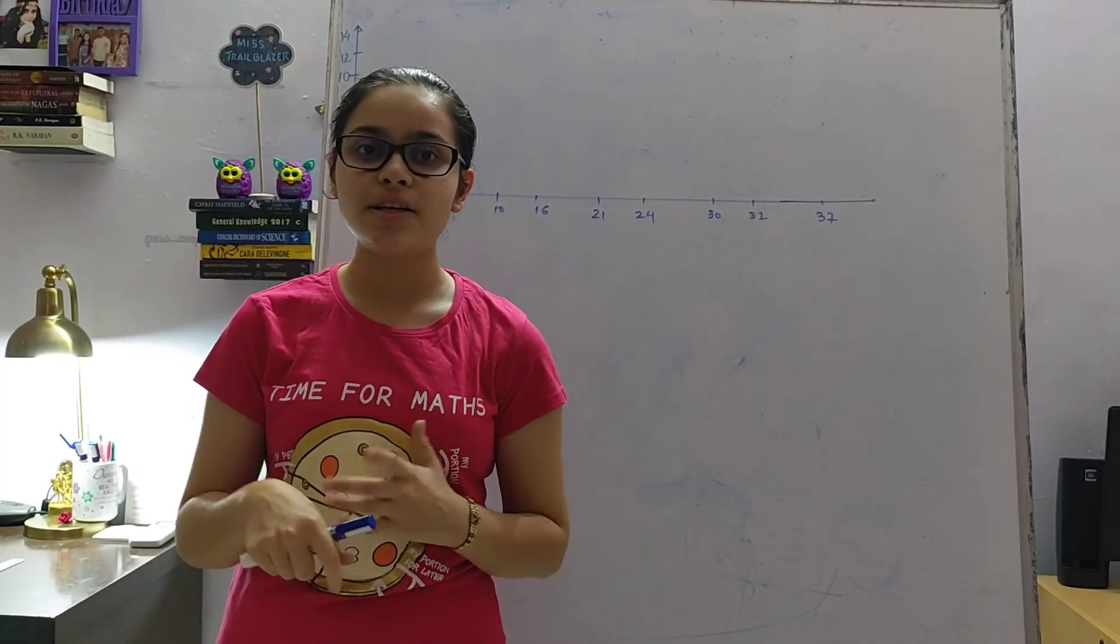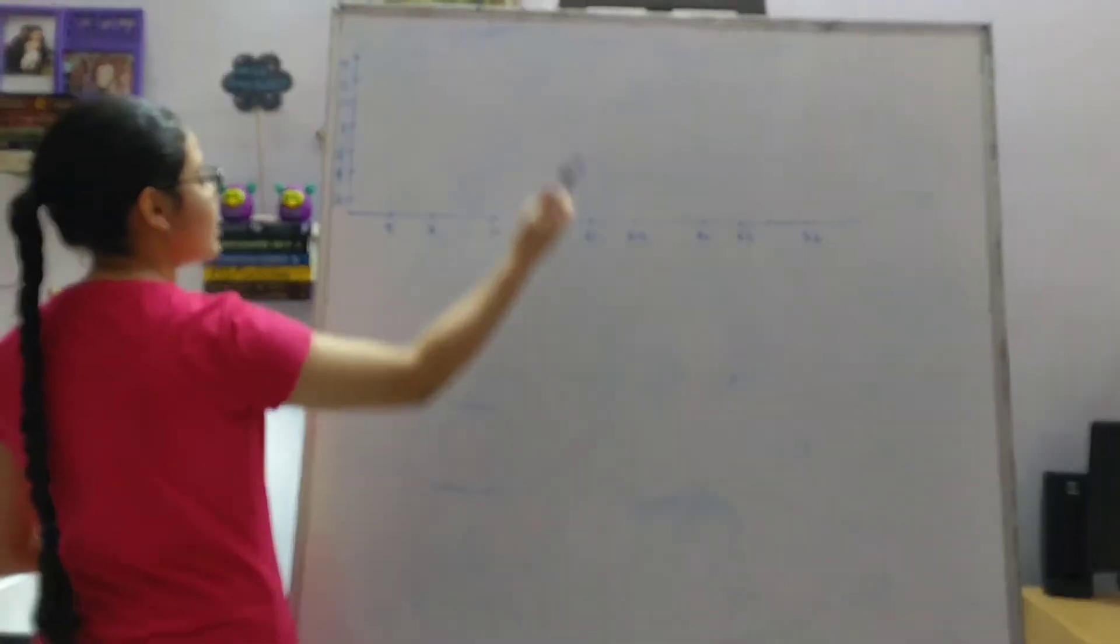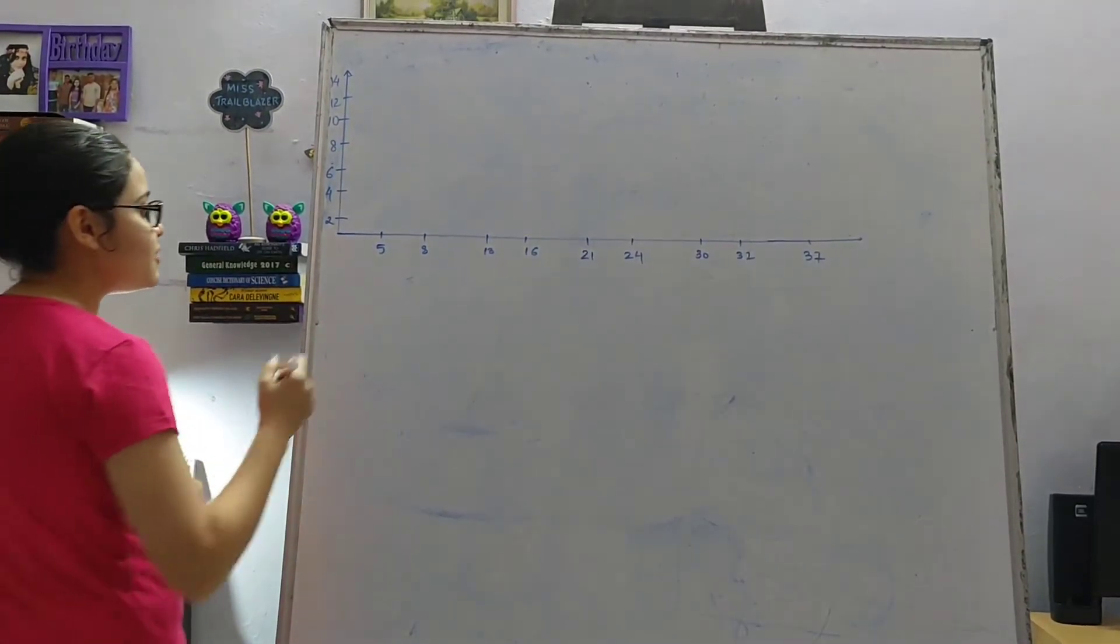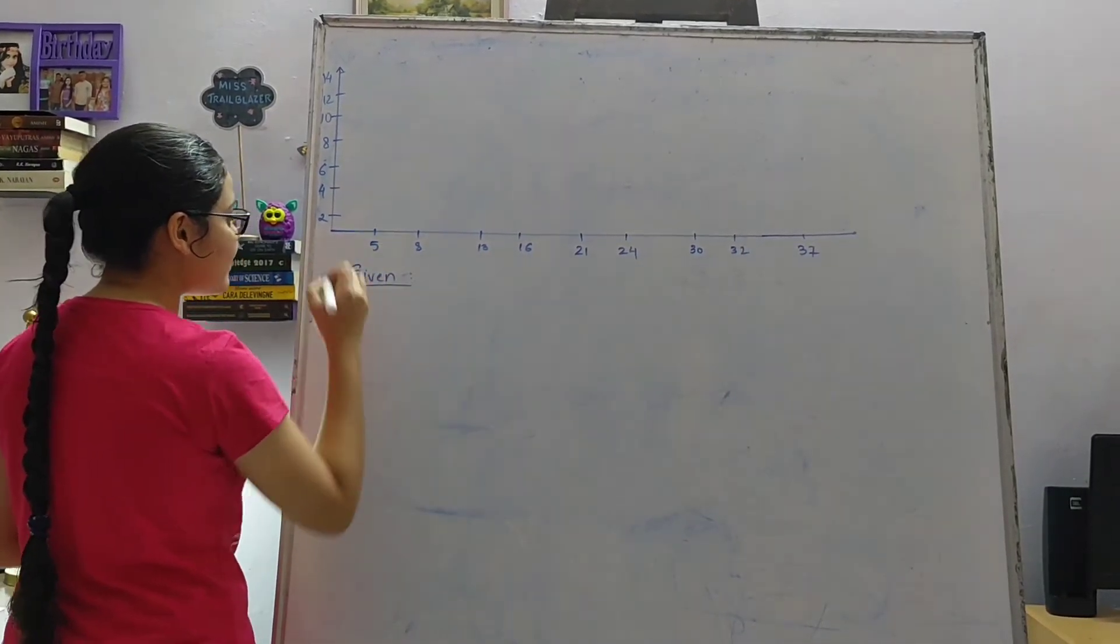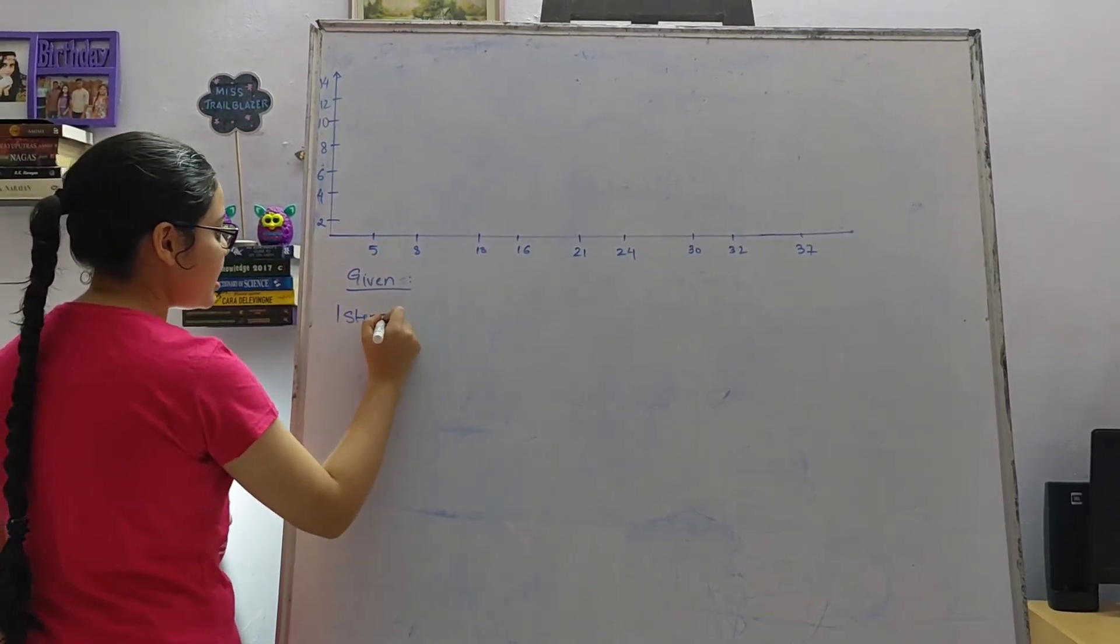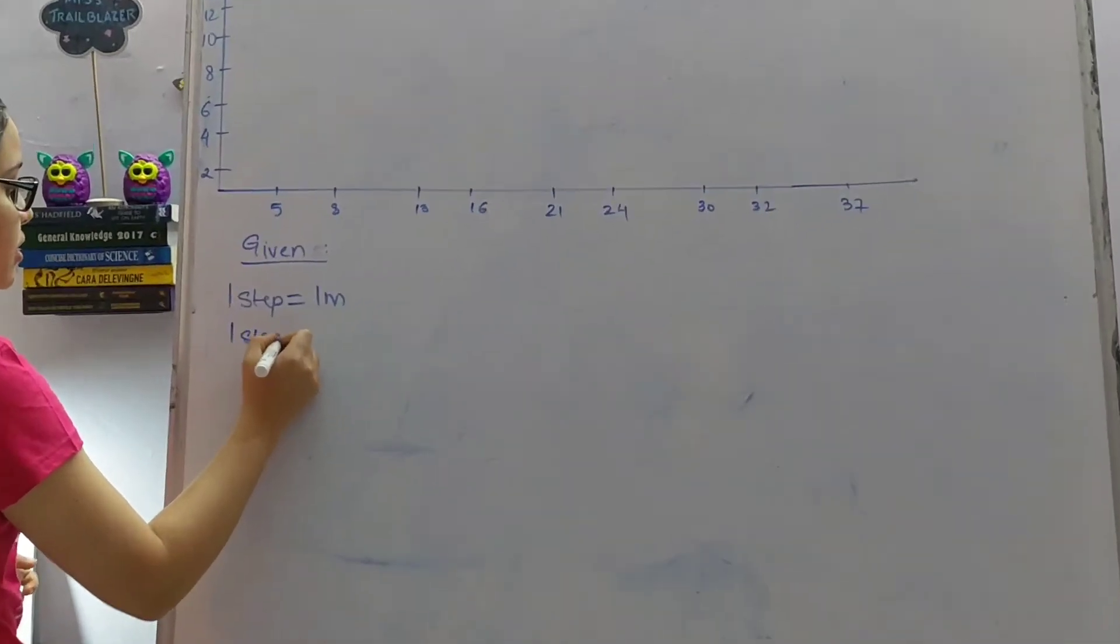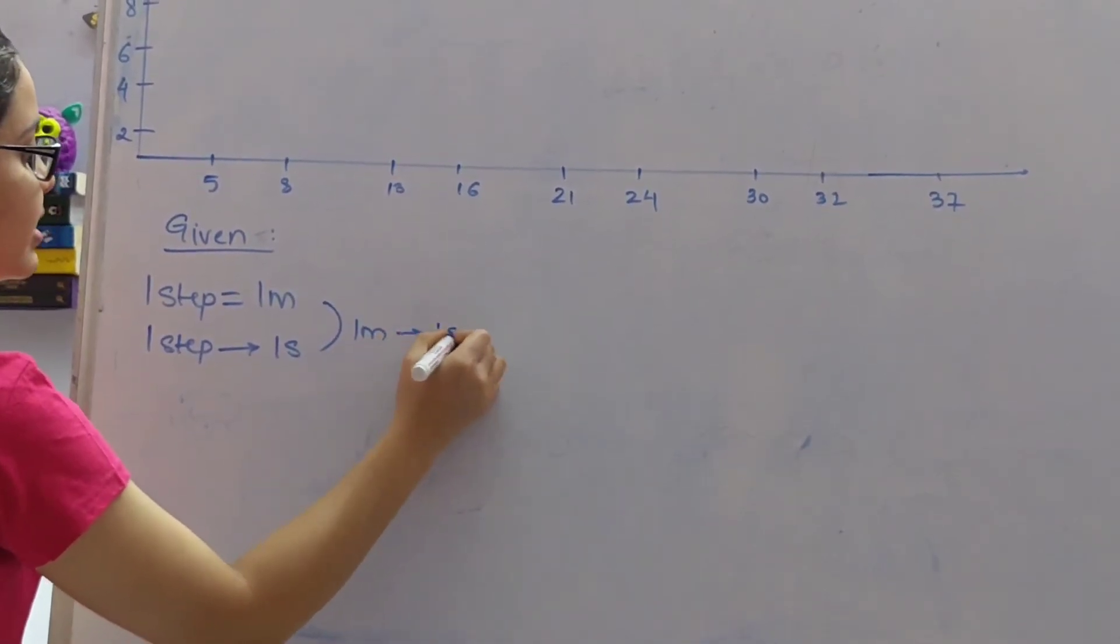Now that we have read the question let us try to solve it on board. The question also asks us to draw a graph but we will draw the graph once we have solved it, it will be easier for us. So what are the given parameters? It is given that one step of the man is equal to 1 meter, and in one step the time taken to travel is 1 second.